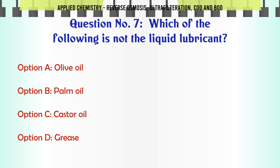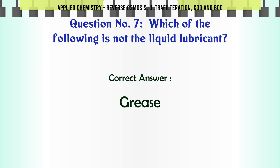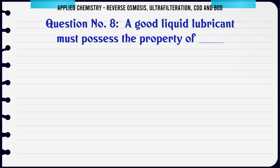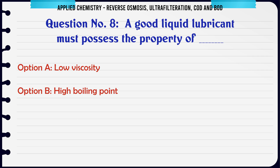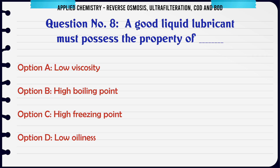Which of the following is not a liquid lubricant? a) olive oil, b) palm oil, c) castor oil, d) grease. The correct answer is grease. A good liquid lubricant must possess the property of: a) low viscosity, b) high boiling point, c) high freezing point, d) low oiliness.